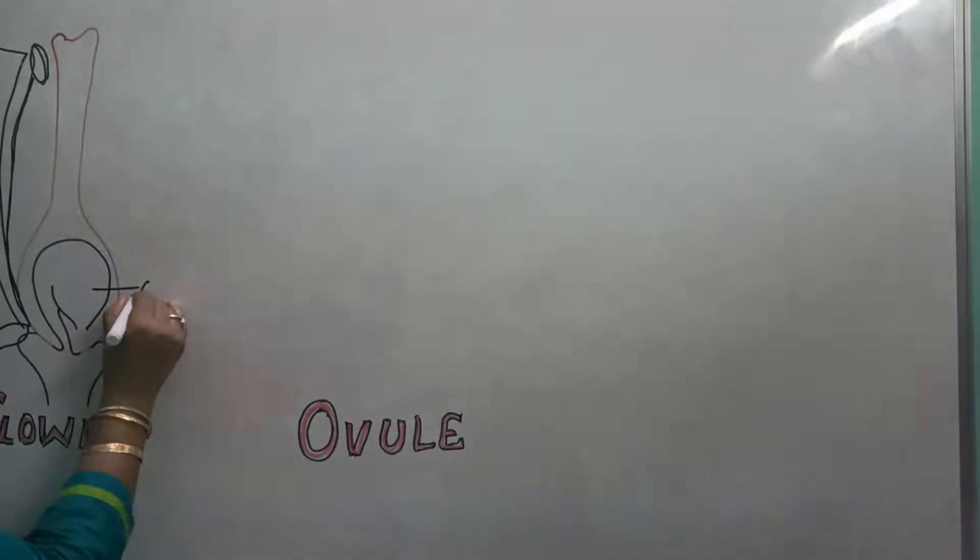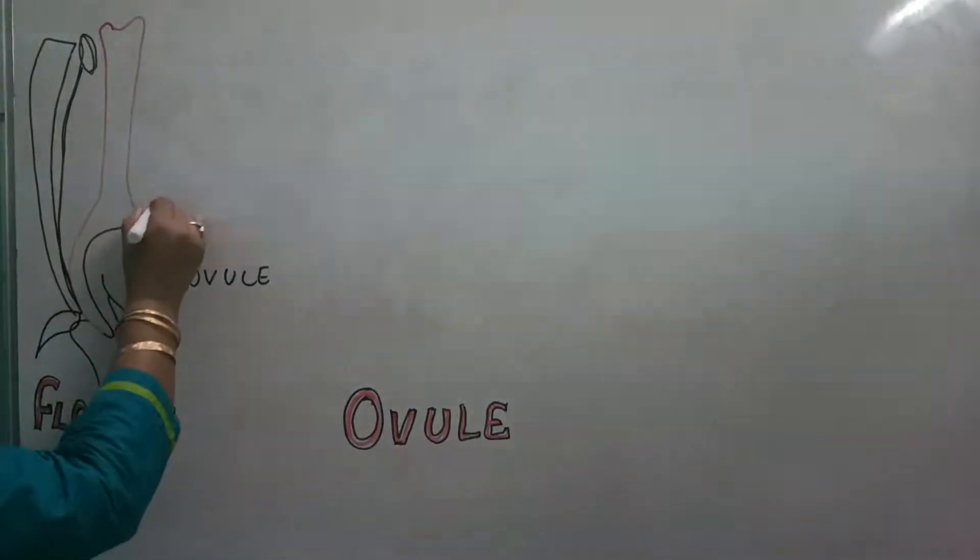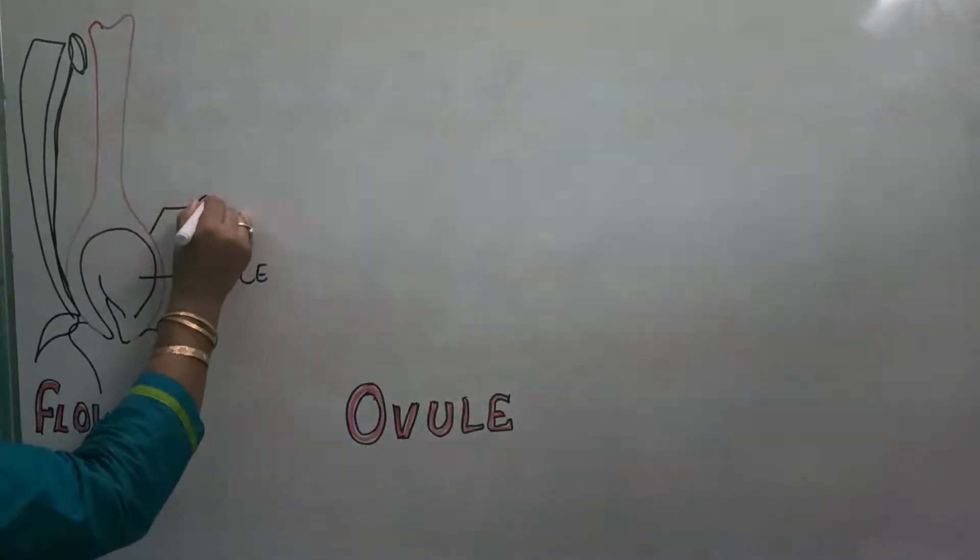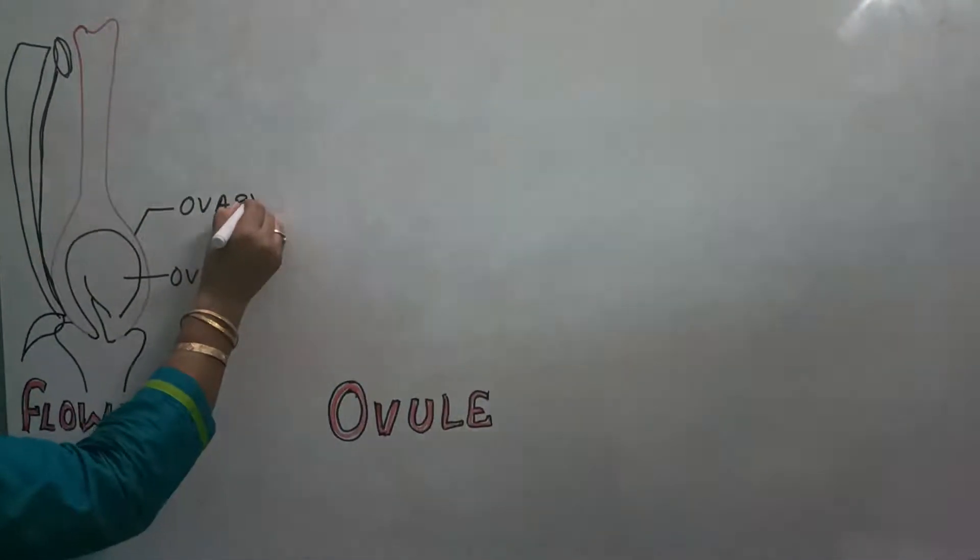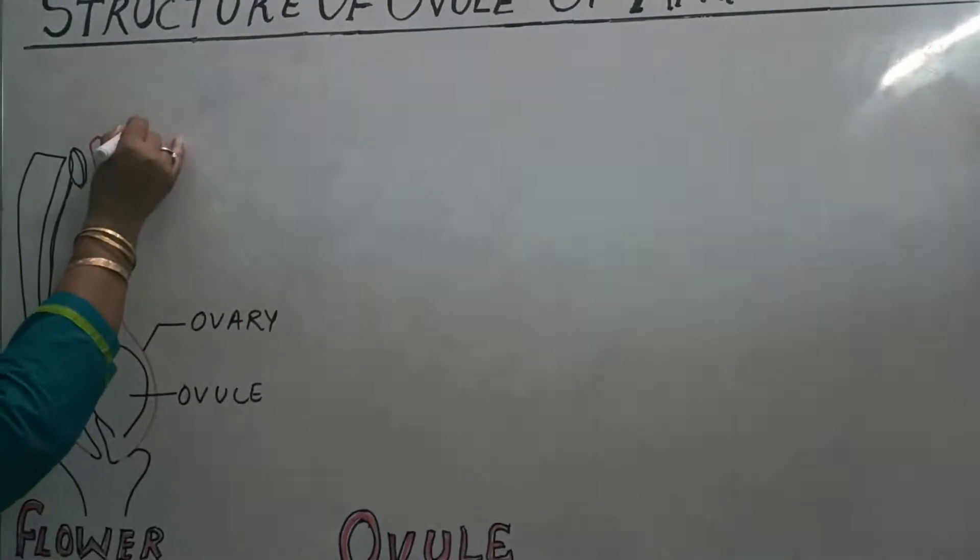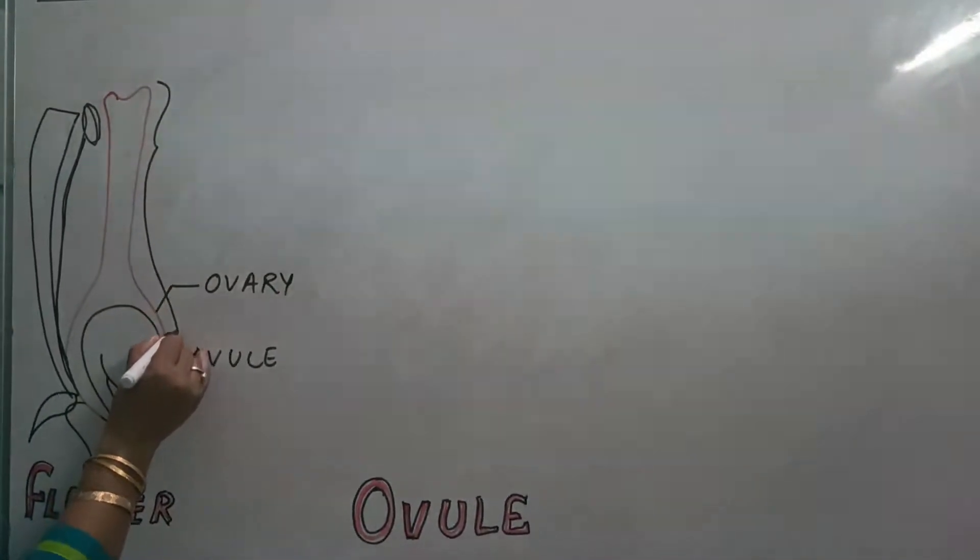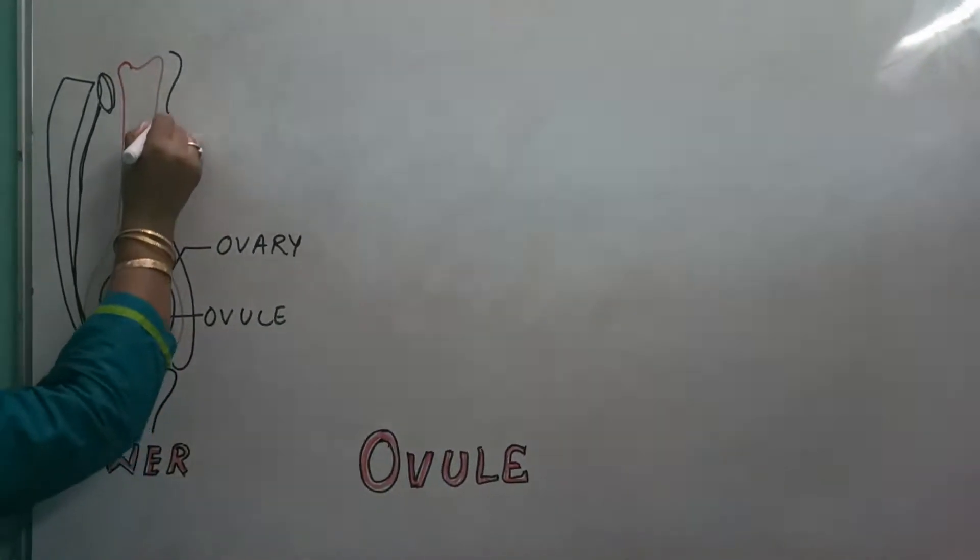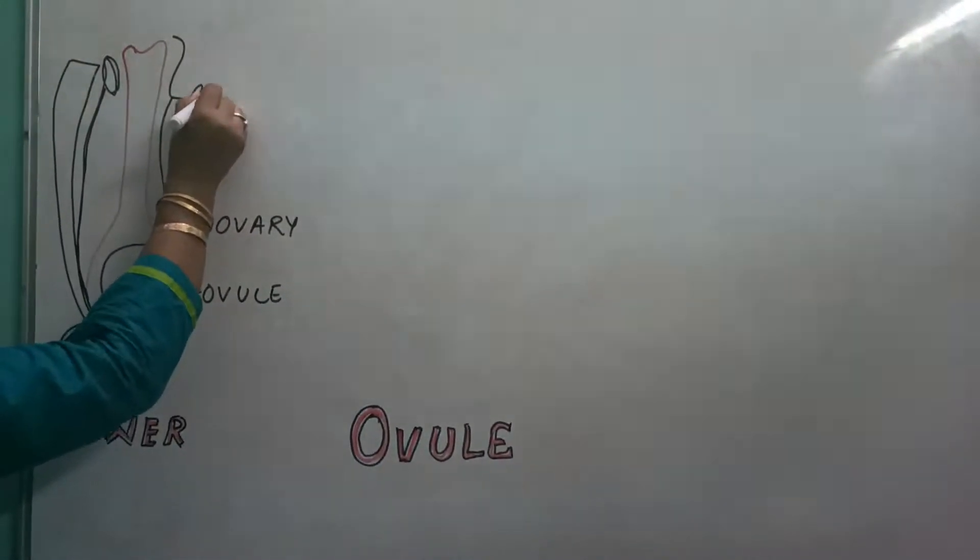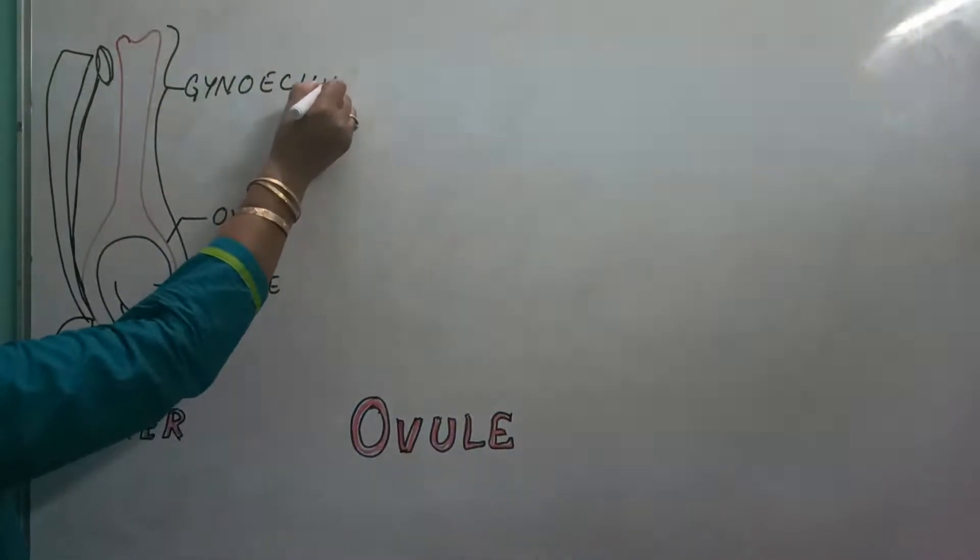And ovule is there inside the ovary, O-V-A-R-Y. So no mixing at all. Ovule, this complete part from stigma followed by style, then followed by ovary, then ovule. This whole part is to be termed as gynoecium, G-Y-N-O-E-C-I-U-M.